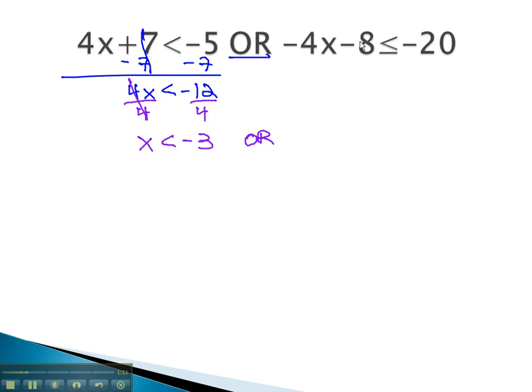Or we solve the other equation by adding 8, giving us negative 4x is less than or equal to negative 12. To get the x alone, we simply divide both sides by negative 4. And notice we've divided by a negative, so we flip the inequality symbol to get x is greater than or equal to 3.